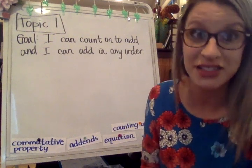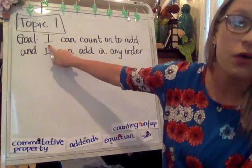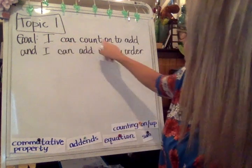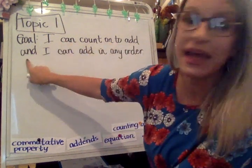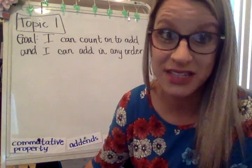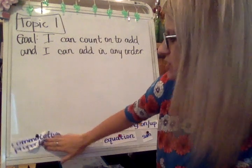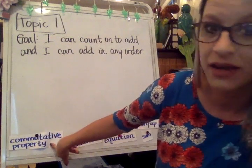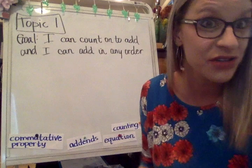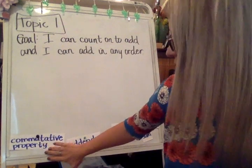Hi, we're going to be working on the first lesson in topic one. The goal is I can count on to add and I can add in any order. There's a fancy word that we can use when we're talking about adding in any order and it's called commutative property. It's not something that you have to know that big word, but it is something that's really cool if you did remember that.